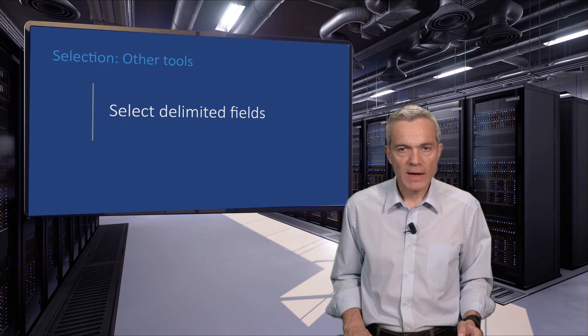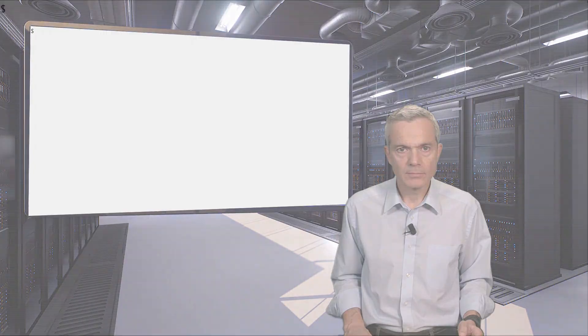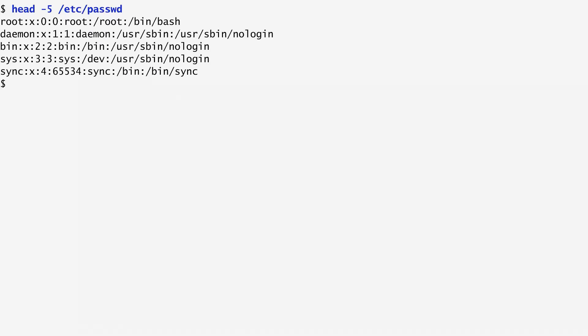We can use the cut command to select parts of a line. We've briefly seen in previous units how to use the cut command to separate and select the file's fields. Let's now get into more detail.